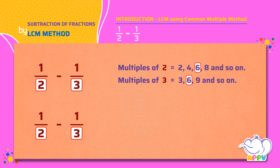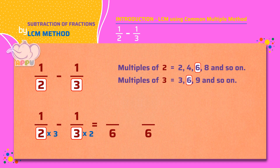We multiply the denominator of the first fraction with 3, that is 2 times 3 equals 6. Next, we multiply the denominator of the second fraction with 2, that is 3 times 2 equals 6. Since we multiply the denominator, we multiply the numerator with the same number, that is 1 times 3. We get 3 by 6.